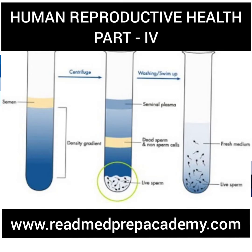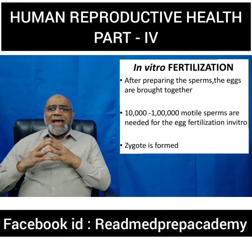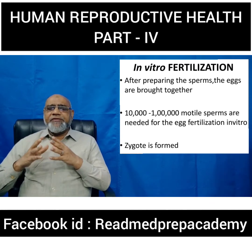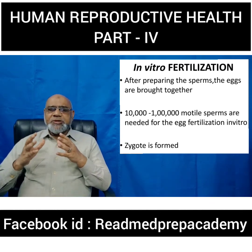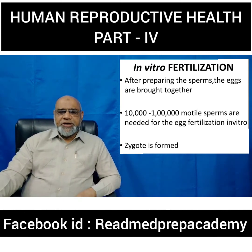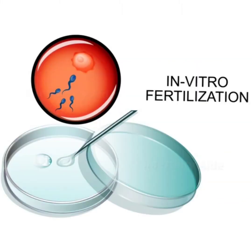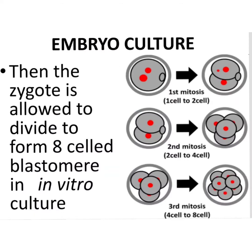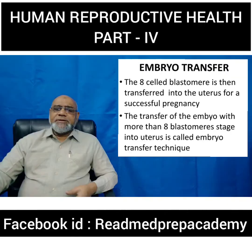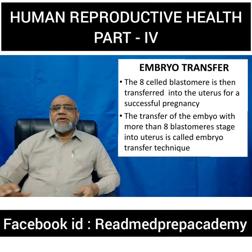After preparing the sperms, the eggs are brought together. 10,000 to 1,000,000 motile sperms are needed for egg fertilization in vitro. The eggs and sperms are placed in an in vitro condition and the zygote is formed. After the zygote is formed, it is allowed to divide to form an 8-cell blastomere in in vitro culture. The first division results in 2 cells, the second in 4 cells, and the third mitosis results in 8 cells.